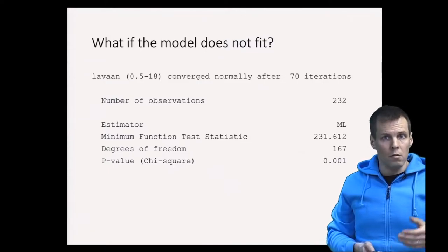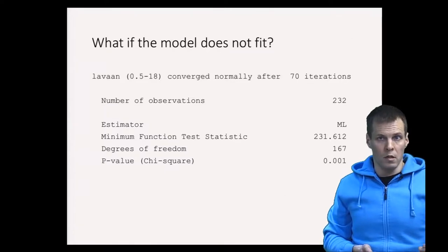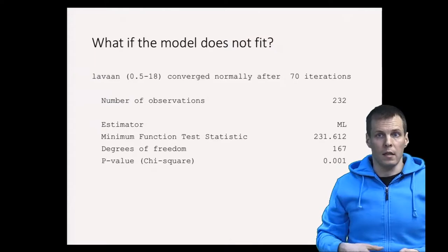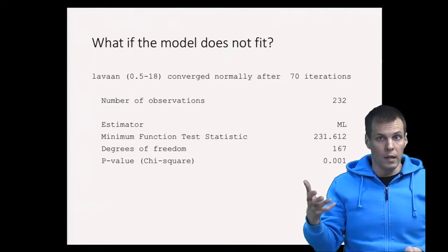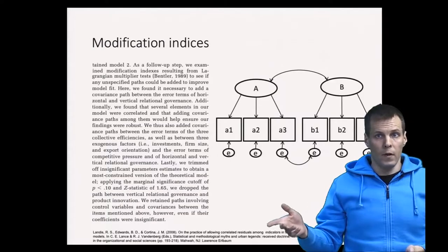There are two main ways of doing diagnostics for confirmatory factor analysis in an exploratory manner. The exploratory manner means that you don't have any a priori hypothesis of what is incorrect. The first approach is modification indices.